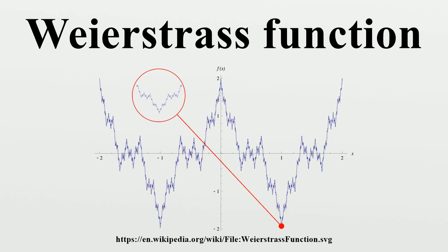For example, the cosine function can be replaced in the infinite series by a piecewise linear zigzag function. G. H. Hardy showed that the function of the above construction is nowhere differentiable with the assumptions 0 < a < 1 and ab ≥ 1.